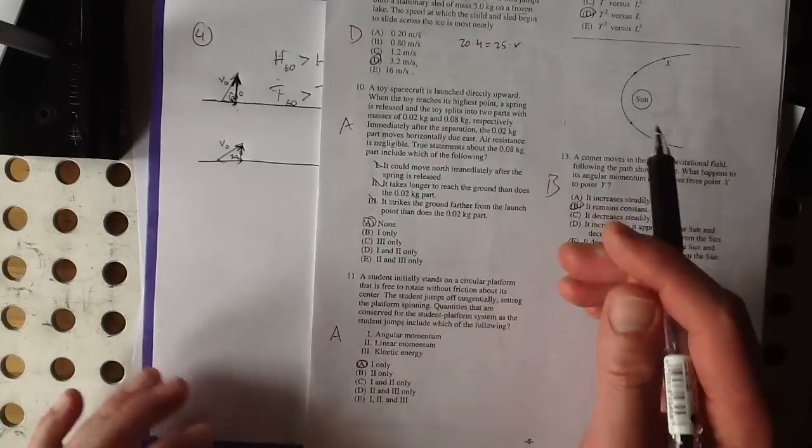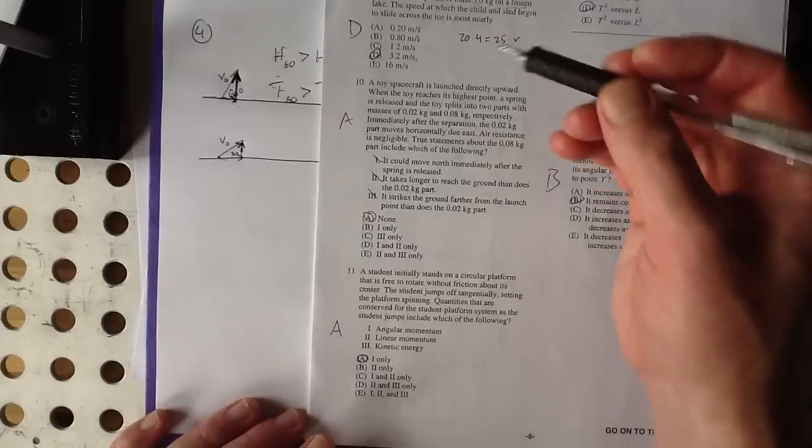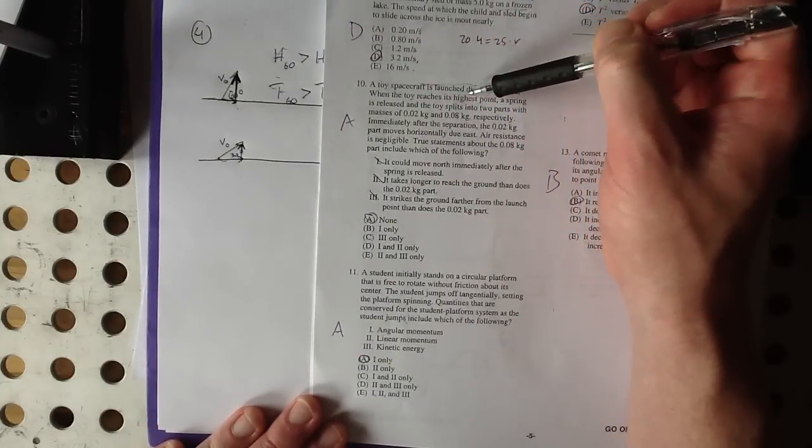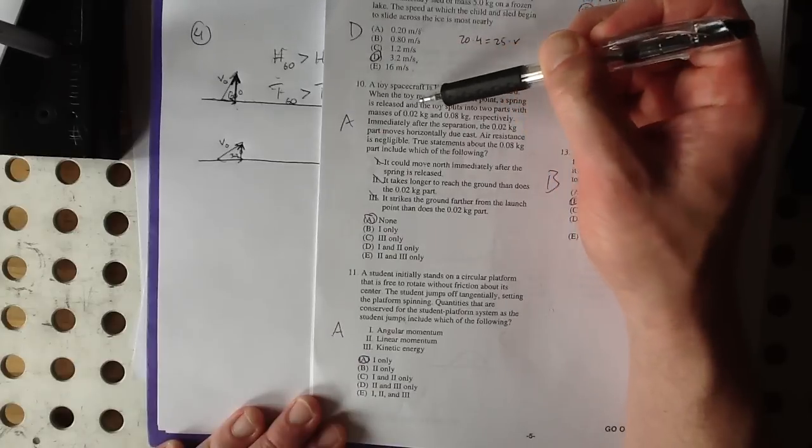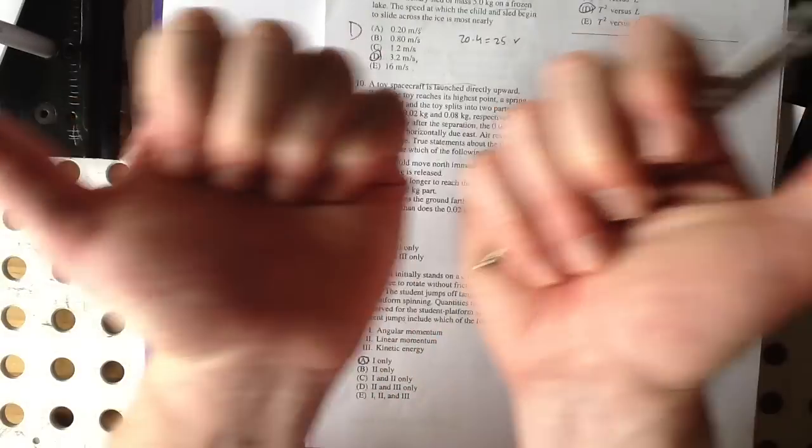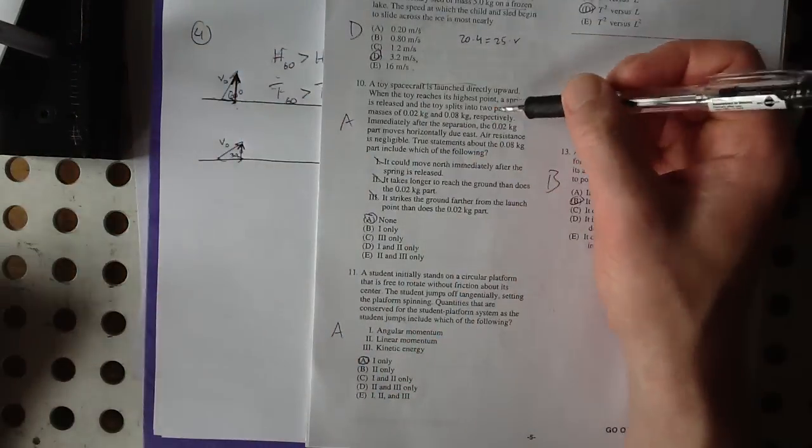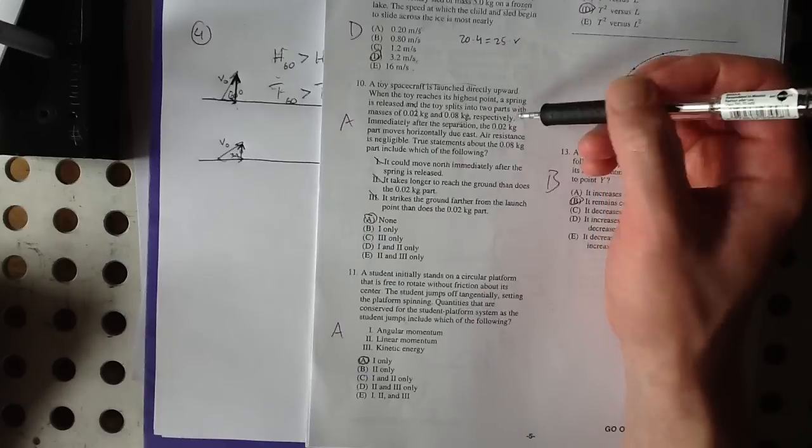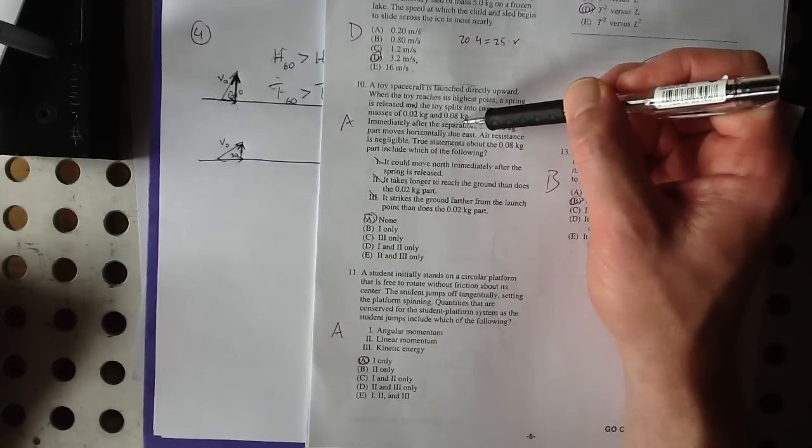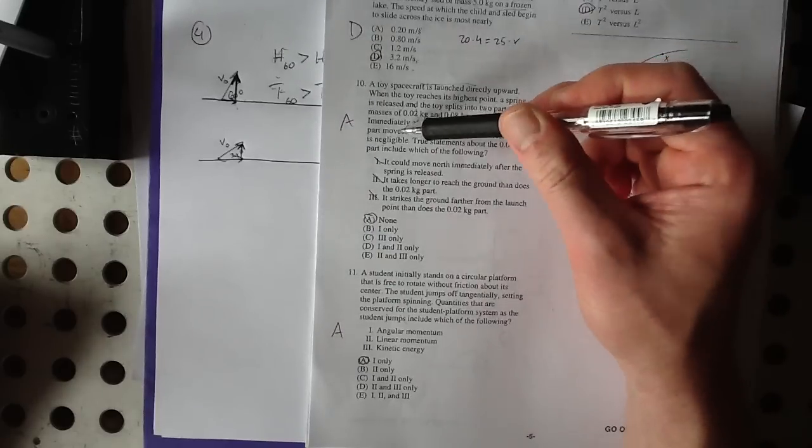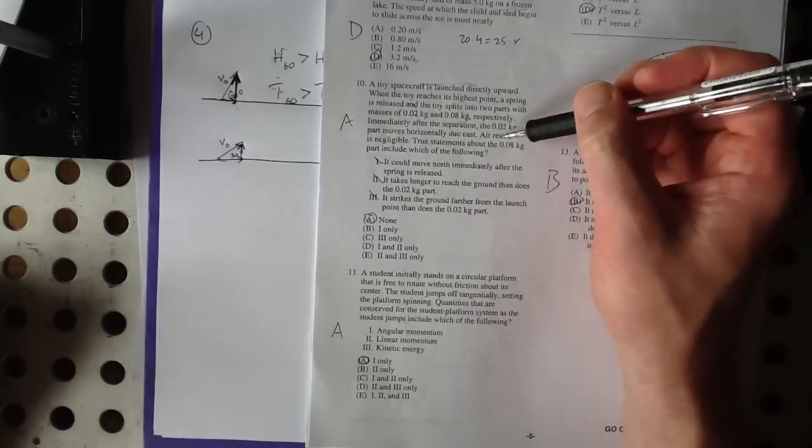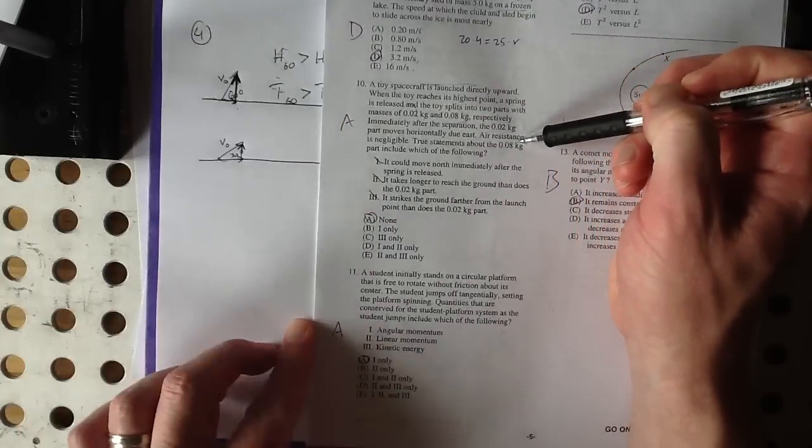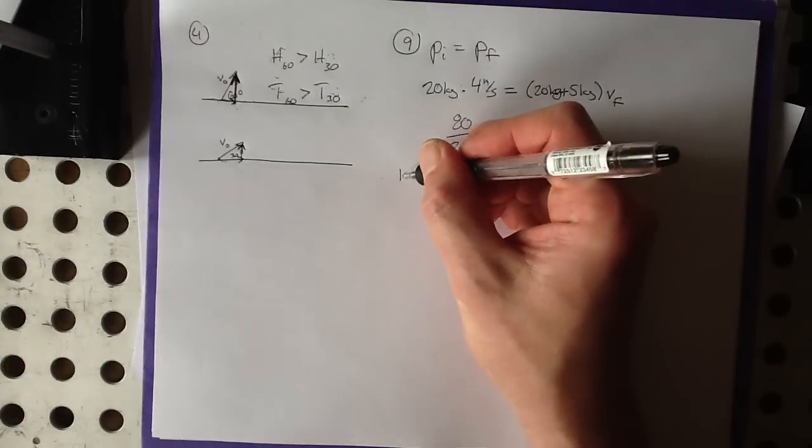Number 10. This is conservation of momentum again. A toy spacecraft is launched directly upward. When the toy reaches its highest point, a spring is released and the toy splits into two parts with masses 0.02 kilograms and 0.08 kilograms. Immediately after separation, the 0.02 kilogram part moves horizontally due east, and we're ignoring air resistance. True statements about the 0.08 kilogram object would be which of the following. Let's draw a little picture of this.